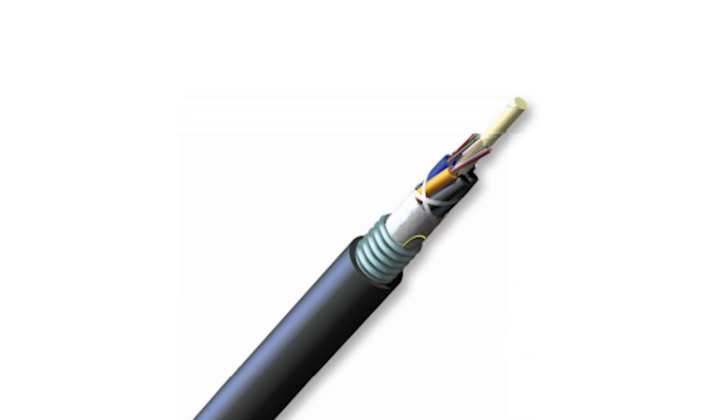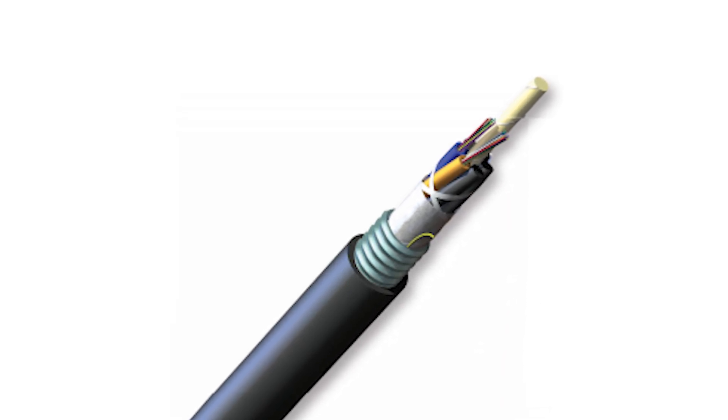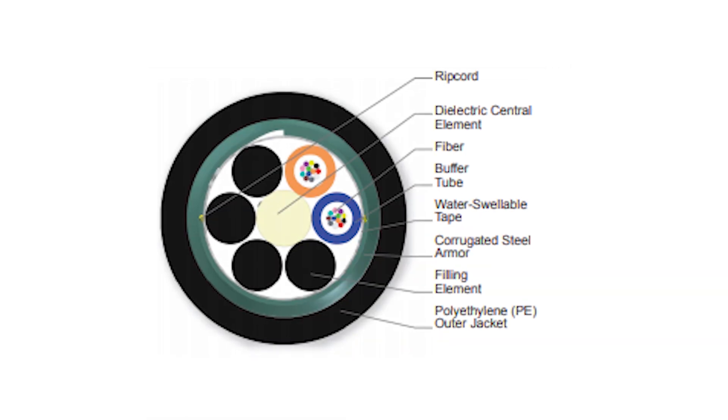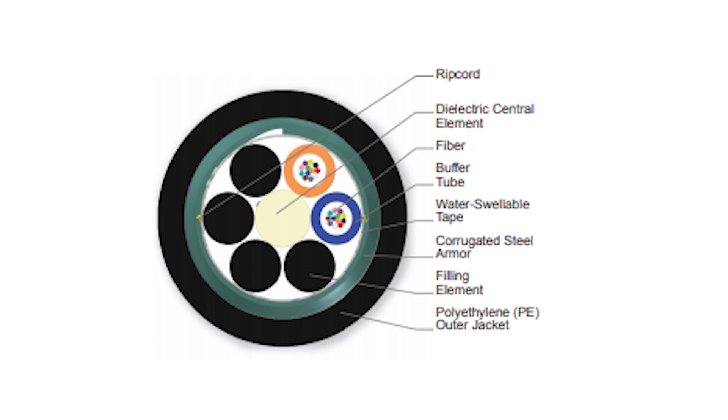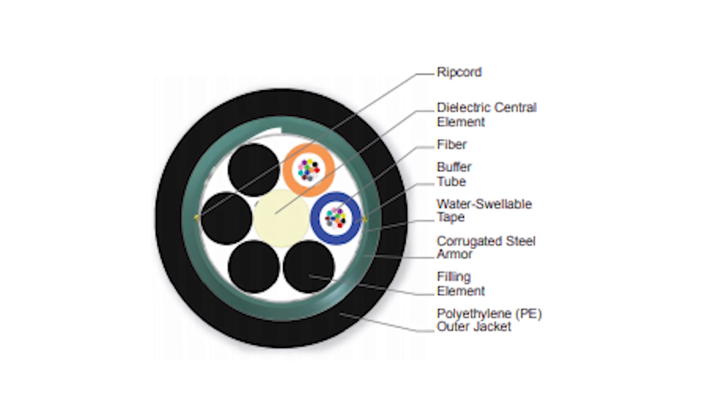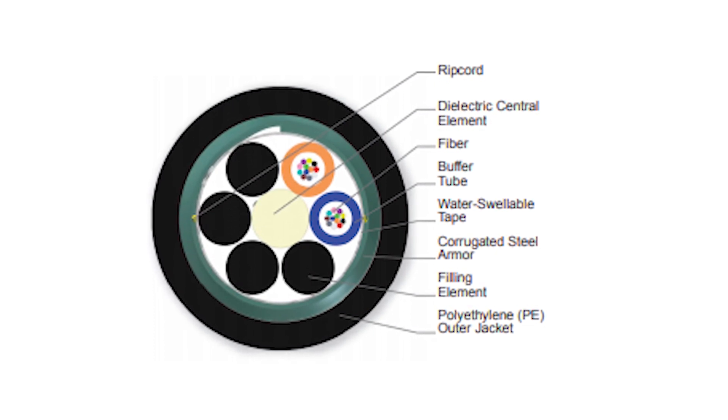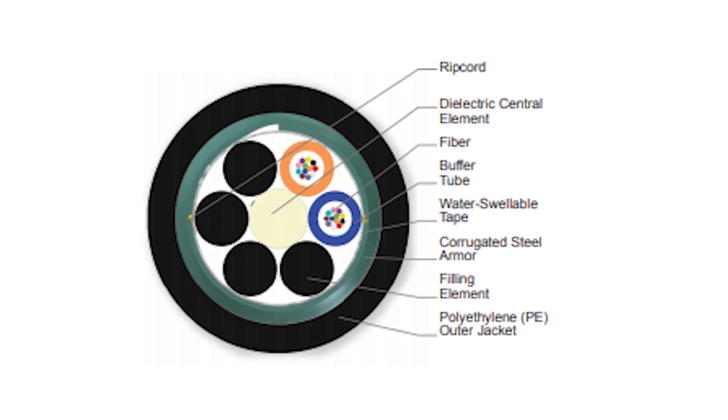This assembly is made with a heavy-duty polyethylene jacket and corrugated steel armor construction which provides crush and rodent protection. Its inner construction consists of a ripcord dielectric central element, the fiber, a buffer tube, water swellable tape, corrugated steel armor, and filling elements.